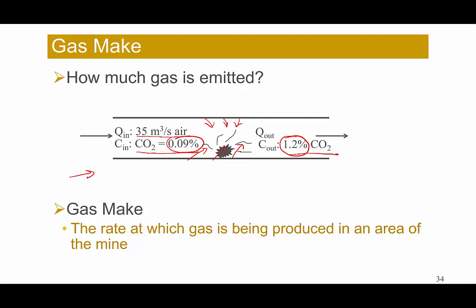By understanding the gas make problem, we can solve this question. The gas make is the rate at which gas is being produced in an area of the mine. In this example, we use G to represent the rate of emission for CO2.